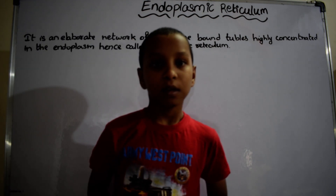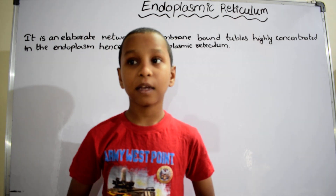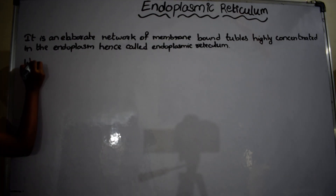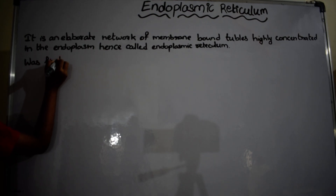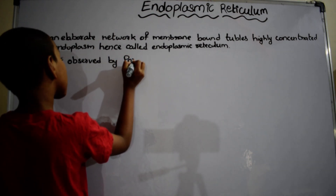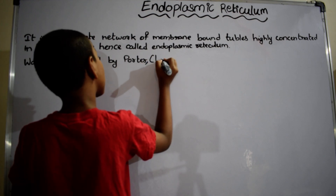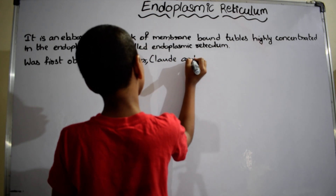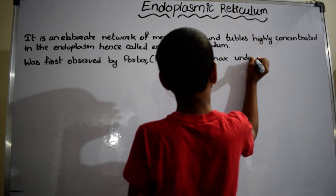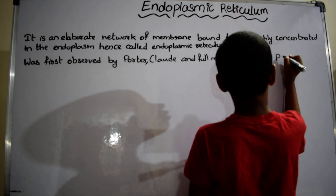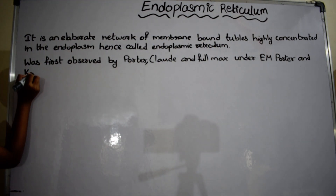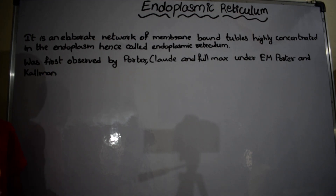Endoplasmic reticulum was first observed by Porter, Clairwood and Fullmax under E.M. Porter and Carlman coined the term endoplasmic reticulum.